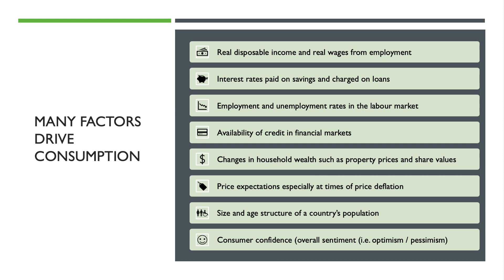Here are some of the key factors driving consumption spending on goods and services — I've listed eight of them: real disposable income and the real wage from jobs; the interest rate paid on savings and charged on loans; the level of employment and unemployment in the labour market; the availability of credit in financial markets; changes in household wealth, in particular property prices and share valuations; price expectations, which can influence spending particularly in times of deflation; the size and age structure of a country's population; and overall consumer confidence.